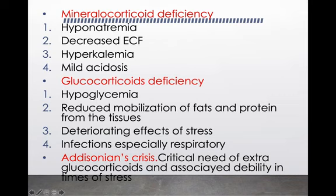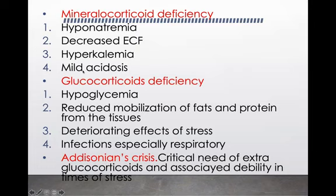Next is mild acidosis. Aldosterone causes secretion of hydrogen into the tubular lumen. If there is no aldosterone, hydrogen will not be secreted; it accumulates in the blood leading to acidosis. The acidosis is mild because there is always respiratory compensation — the respiratory system helps maintain the pH back towards normal. That's why it will be a mild acidosis.